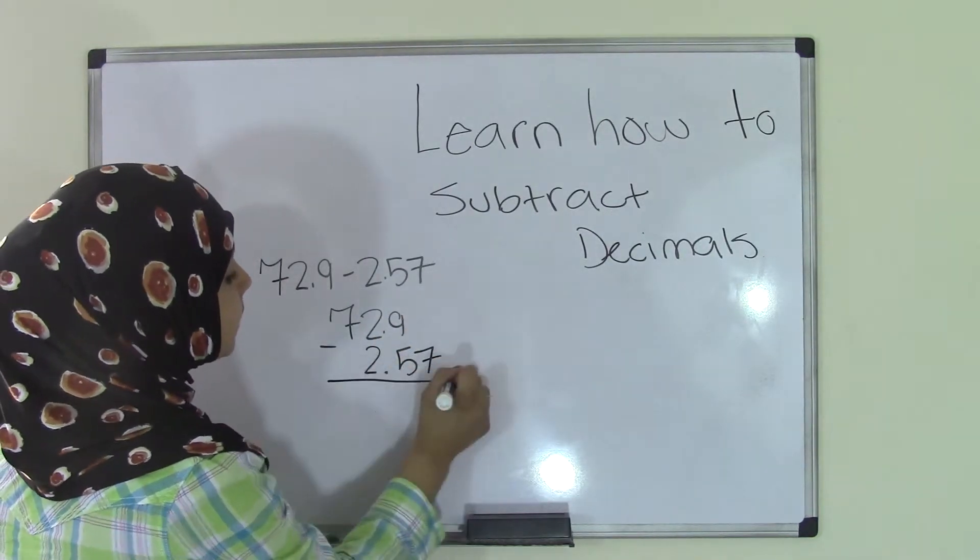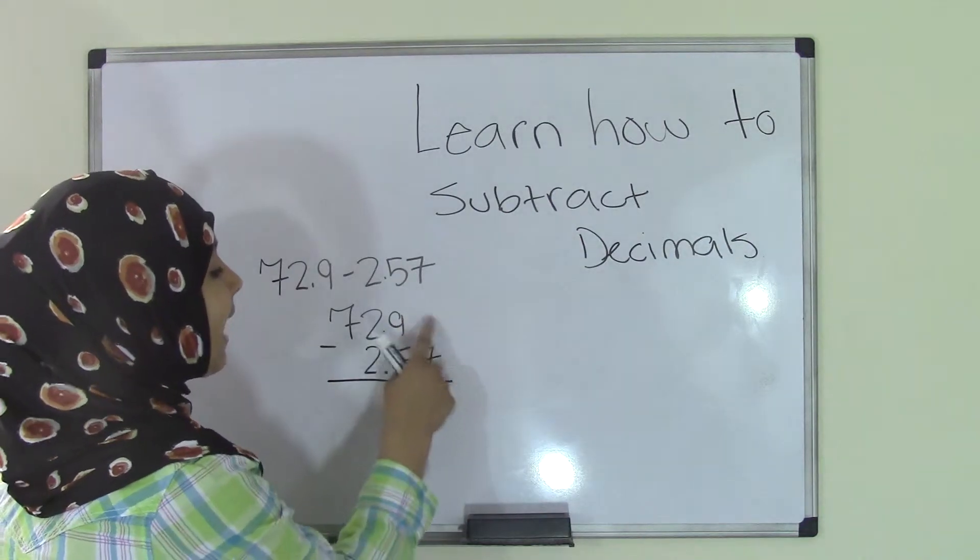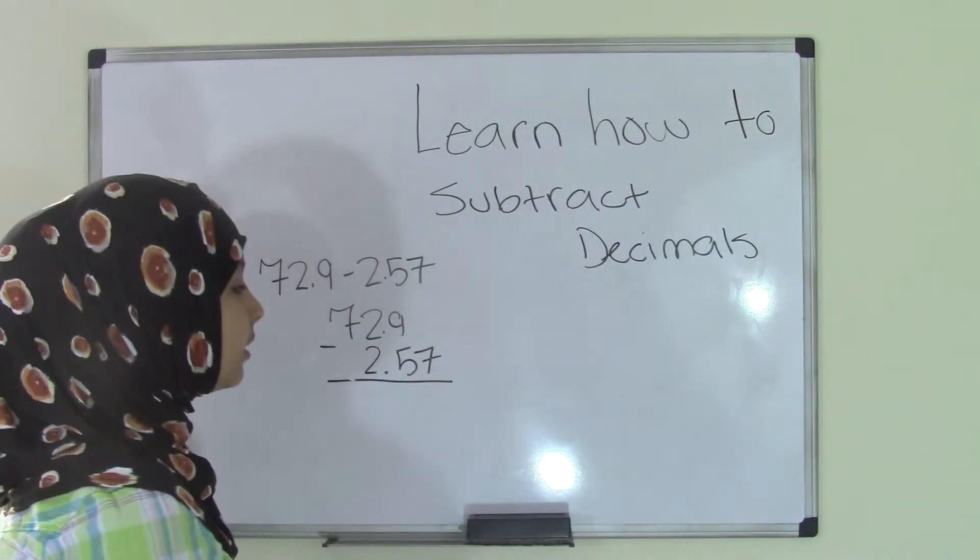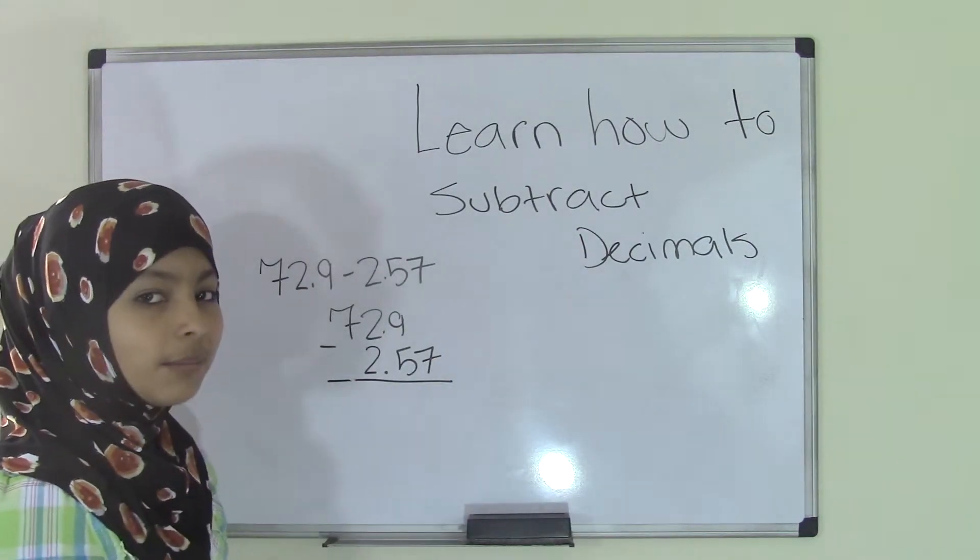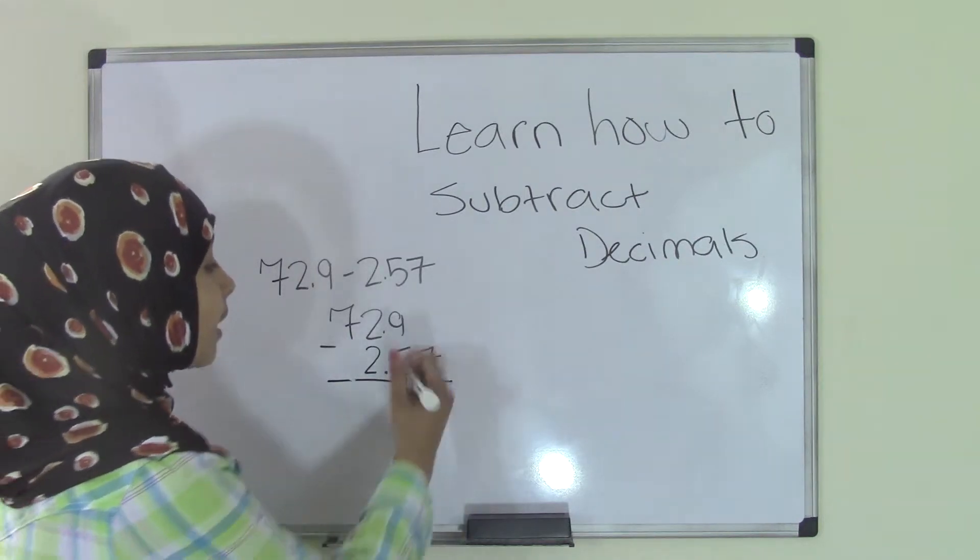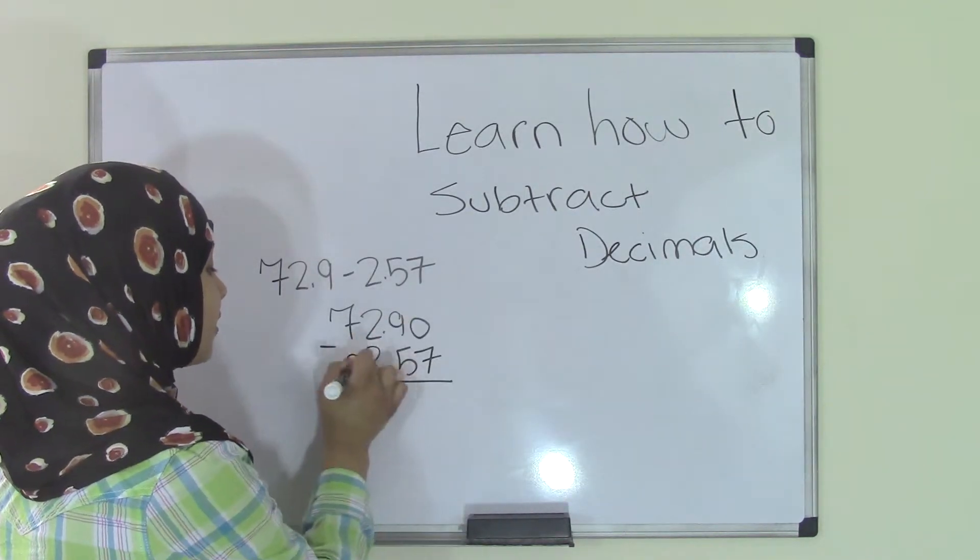Now, I told you guys that where there are no numbers, it's really important that you add the 0s, especially in subtraction. In addition, it doesn't really matter that much, but in subtraction it does. So you have to add a 0 here and a 0 here.